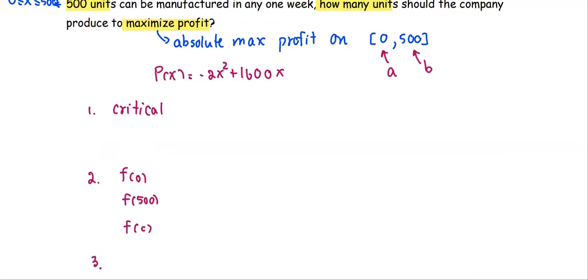For this problem, we look for the x that provides the absolute maximum. So let's start. To find the critical value, we take the derivative of the profit function to get P'(x) = -4x + 1600.